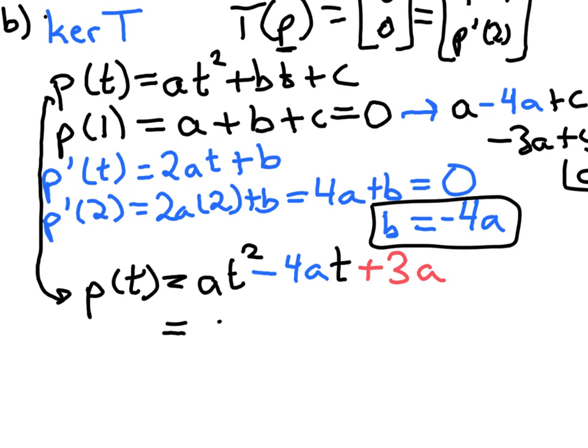And so I could factor out a from that whole thing. So this would be a(t²-4t+3). And this is where a can be any number. A is our free variable in this case. A is any real number. And then a(t²-4t+3) would be a polynomial in the kernel of T.